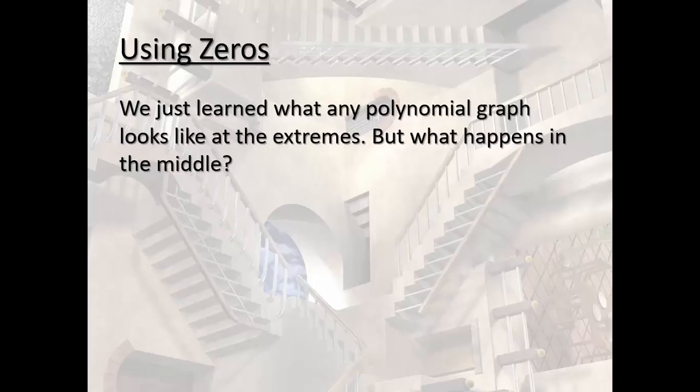In the last video, we just learned what a polynomial graph looks like at the extremes, what it does as x approaches negative infinity and positive infinity. And that is very helpful to us. But what about the middle? What happens in between?